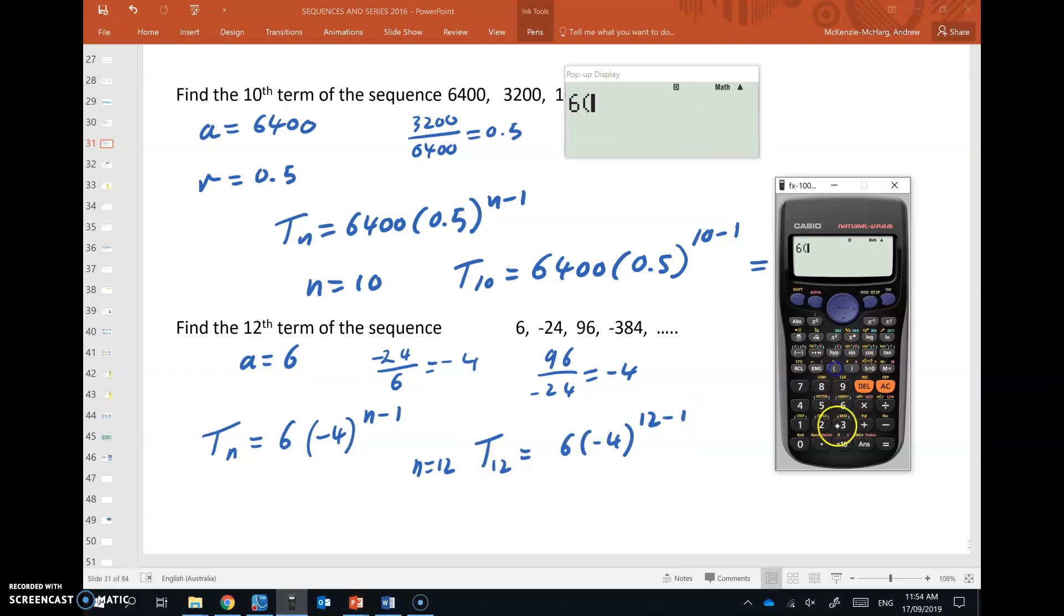Okay, 6 by negative 4, 12 minus 1 gives negative 25165824. I'll leave that one there. I won't bother writing that down. You can see that on the screen. Okay, so those are geometric sequences. Go ahead and look at the description for the video and let's start working with some of these.